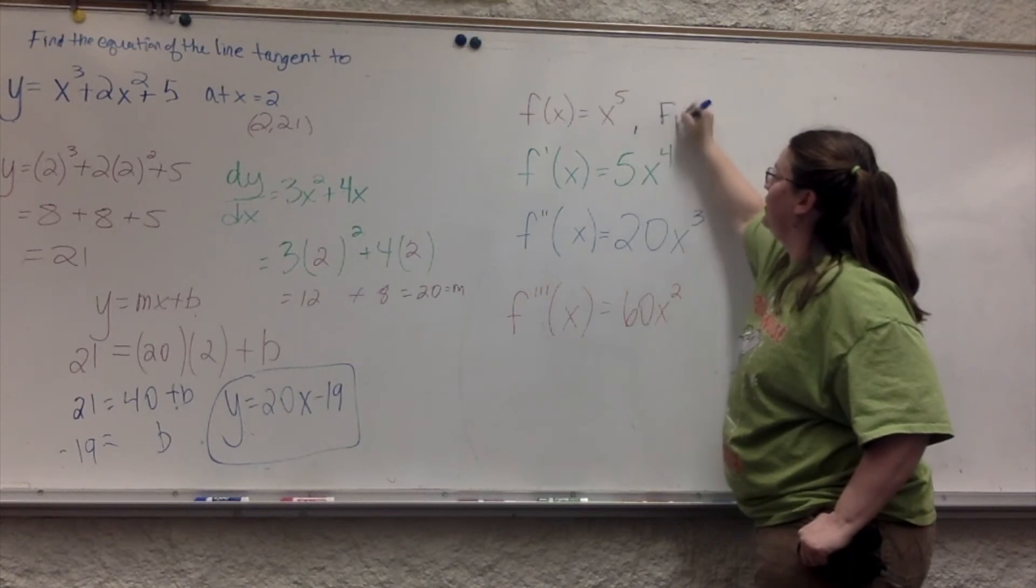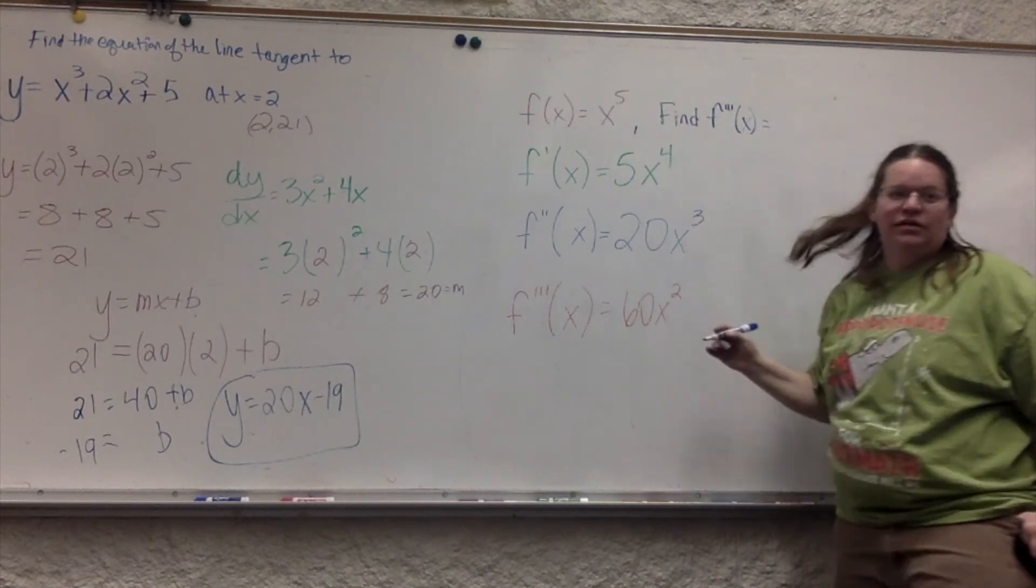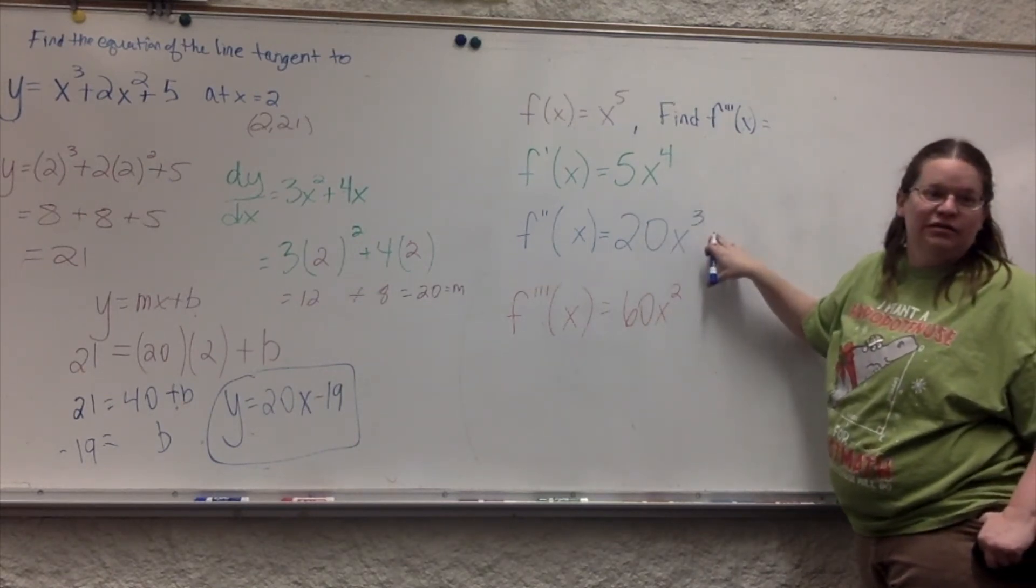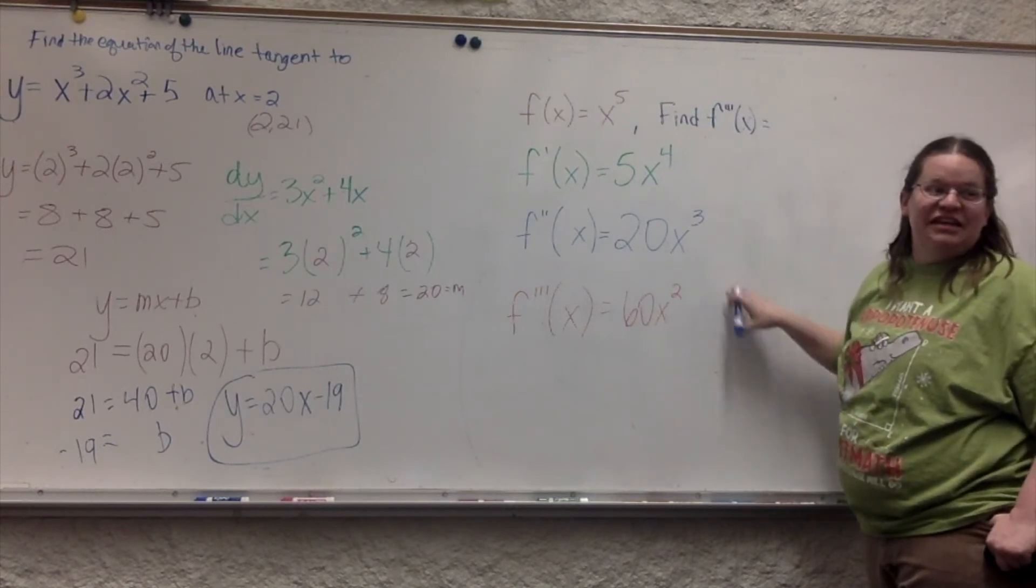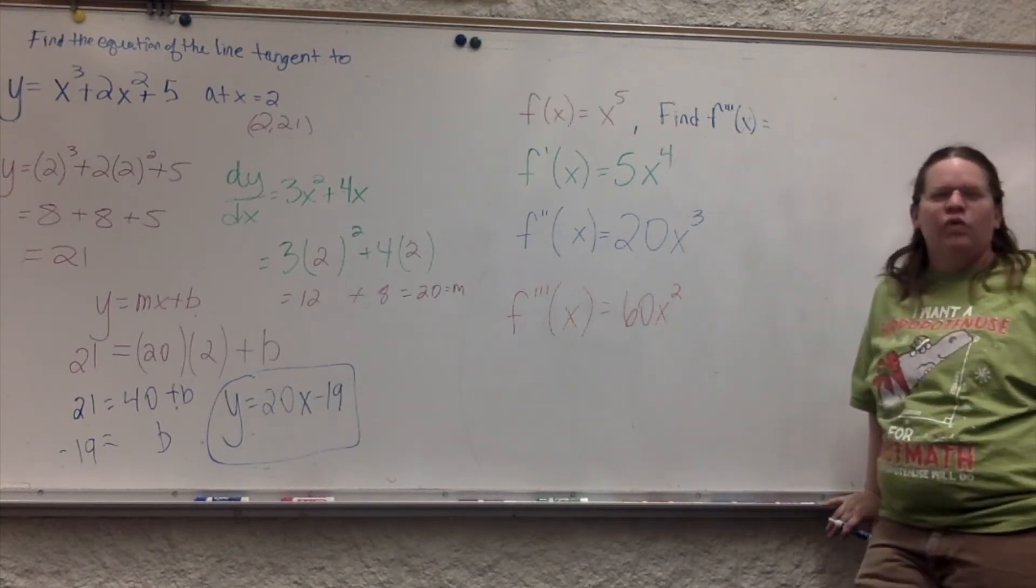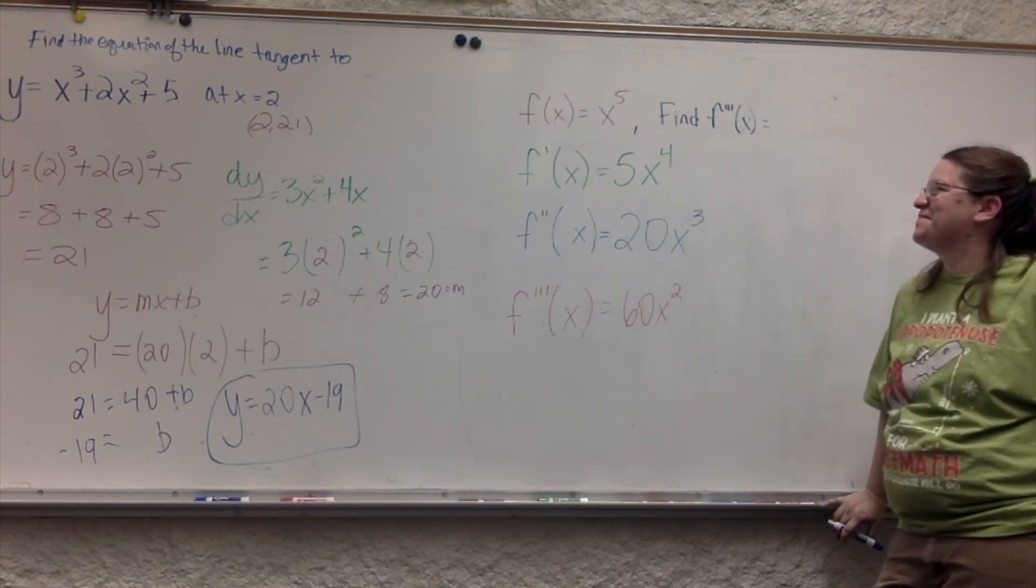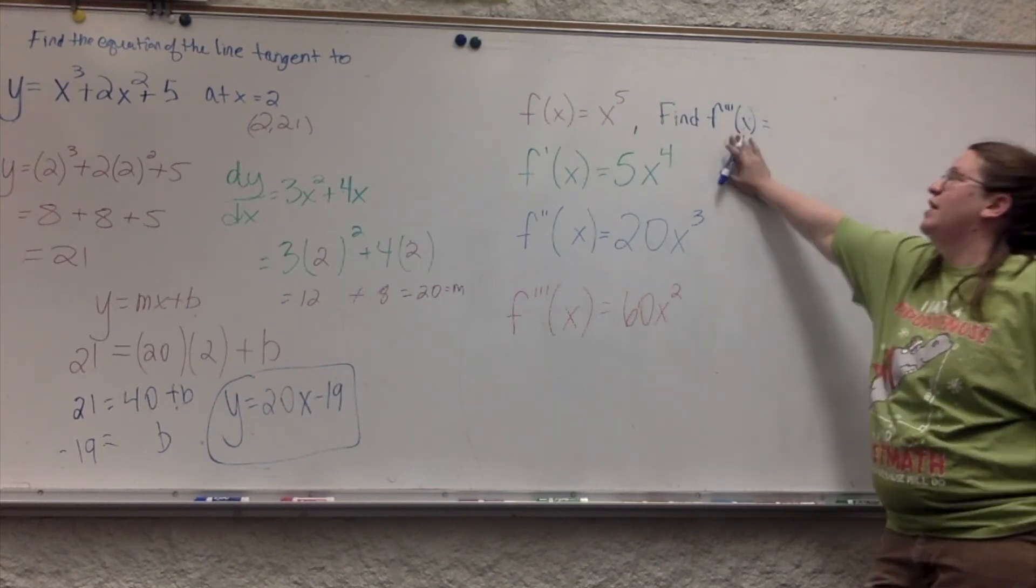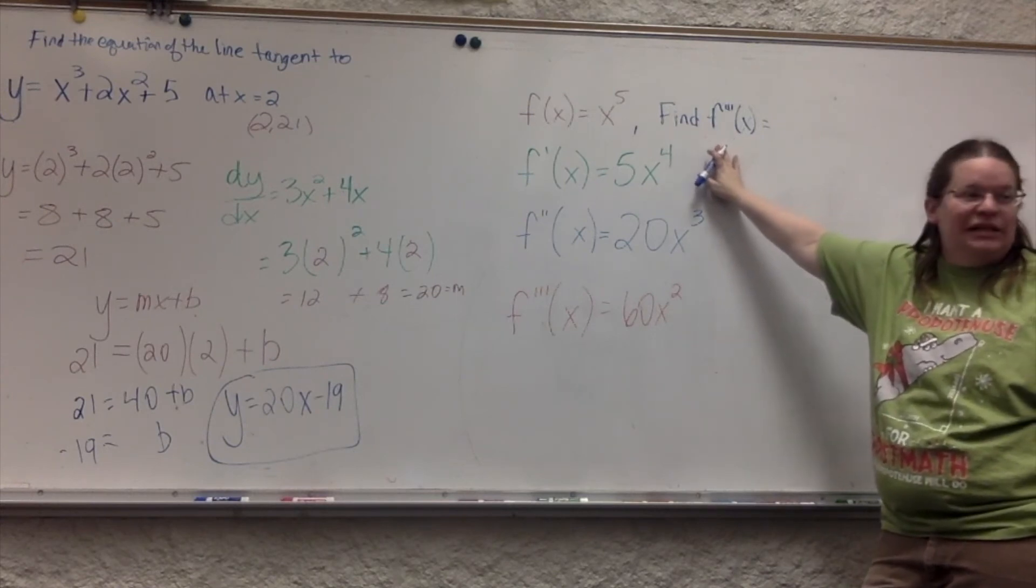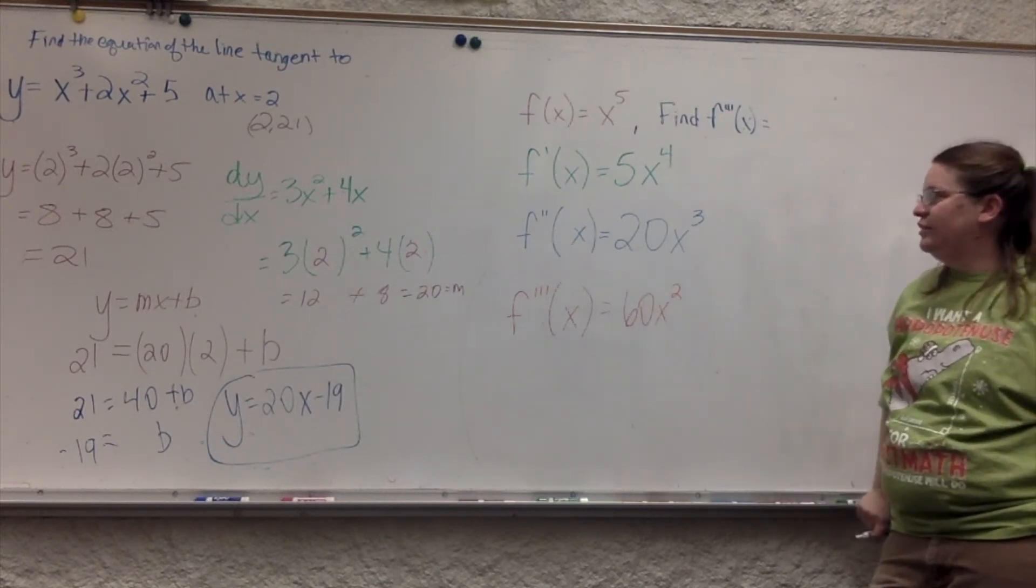So, what would happen is, they would give you this f of x. It'll tell you, find f triple prime of x. And so that's what you will do, is find your first derivative, and then your second, and then your third. I'll rewrite that. And they could keep going. It'll probably tell you to find f double prime of x or f triple prime of x. You could keep going. We don't really have too many needs to go to too many places.